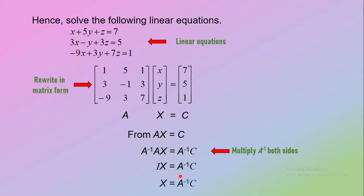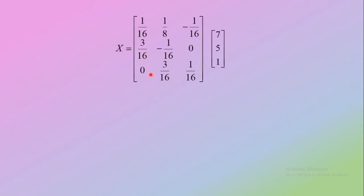So X equals A inverse times matrix C. Remember, you cannot use other methods such as the adjoint method or Cramer's rule here; you must solve the system by finding the inverse matrix using the property AB equals kI. Substitute matrix A inverse and matrix C, multiply both matrices to get the column matrix, and write the elements out of matrix form. So we get x, y, and z all equal to 1.